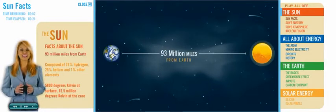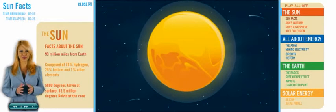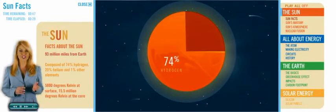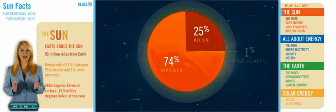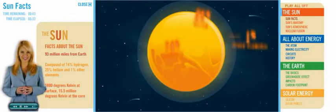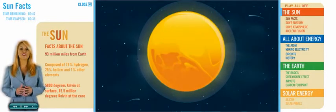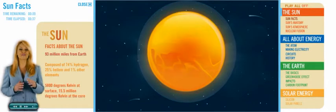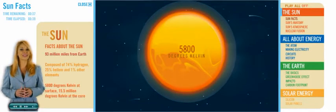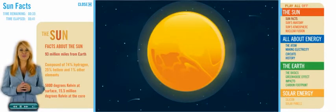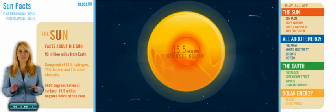The Sun is 93 million miles from Earth. It is composed of 74% hydrogen, 25% helium and 1% other elements. The average temperature on the surface of the Sun is 5800 degrees Kelvin, and at the center of the Sun, temperatures average 15.5 million degrees Kelvin.